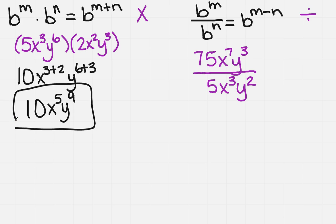So if I come over here on the right, now it's division, so that means I'm going to be subtracting exponents. So I'm going to take 75, and I'm going to divide it by 5. And then I'm going to write out the step where I subtract my exponents.